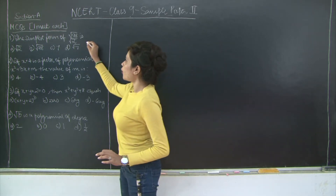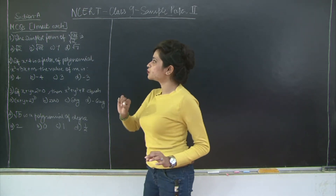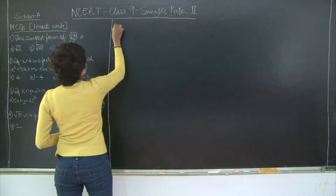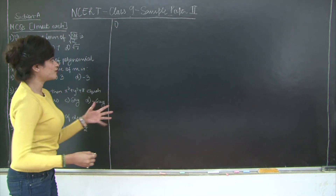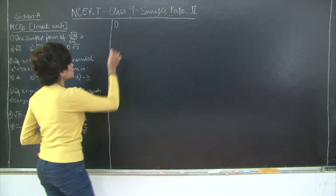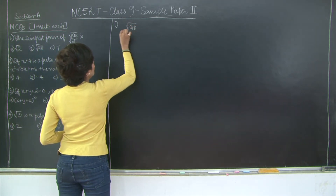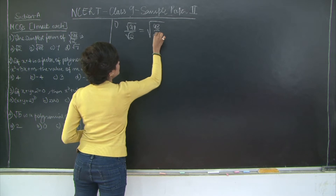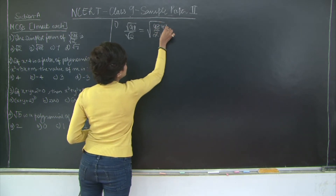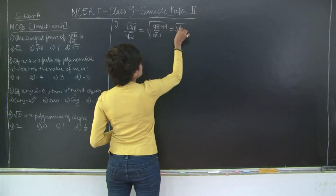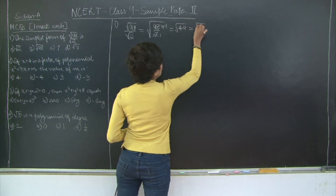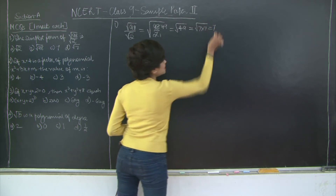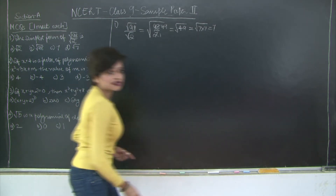The first question is from the number system: the simplest form of √98 upon √2. We can write √98/√2 as the entire root of 98/2. Since 98 divided by 2 is 49, this equals √49, which is √(7×7), so we take out 7. The answer is 7, which is option C.